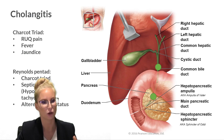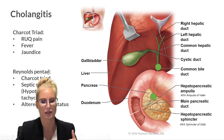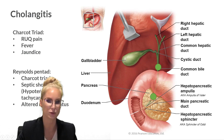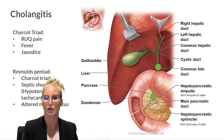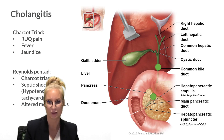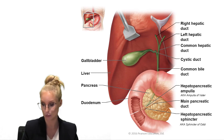In cholangitis, if it progresses to septic shock, we call it Reynolds pentad — that's Charcot's triad plus the symptoms of shock: hypotension, tachycardia, and altered mental status. Diagnosis is clinical, supported by blood tests, and treatment typically involves ERCP to remove the stones and potentially cholecystectomy.